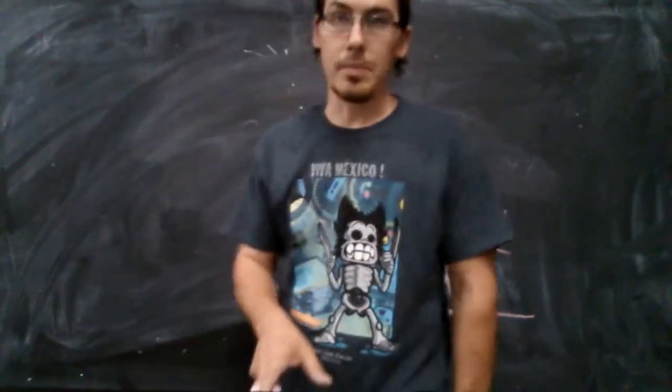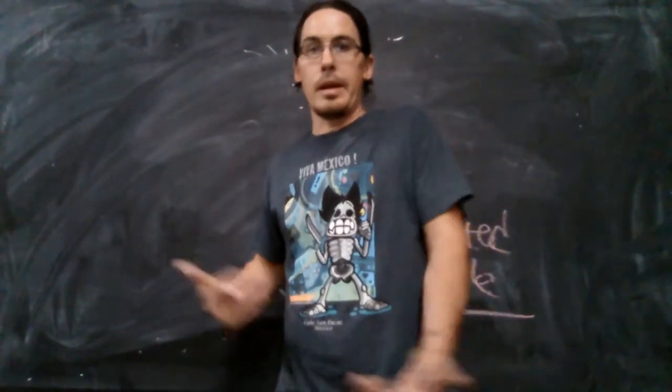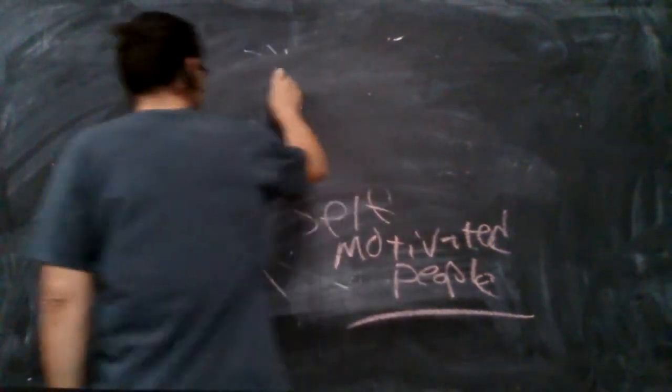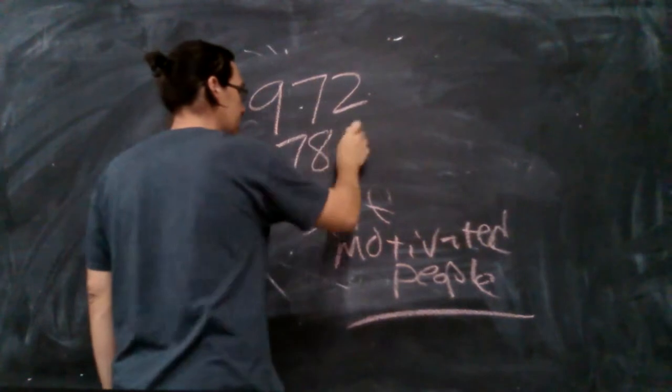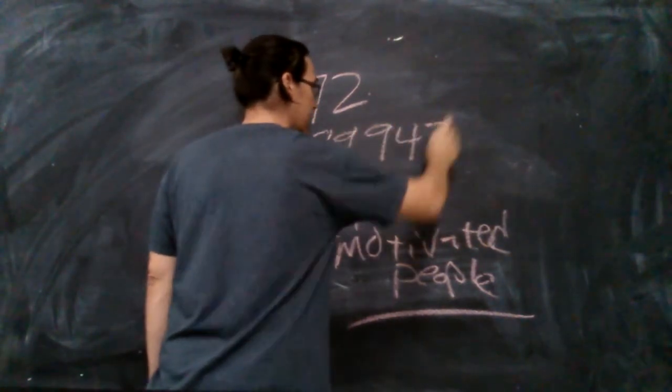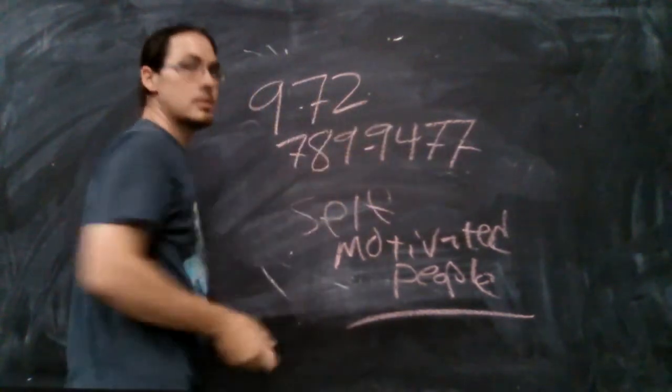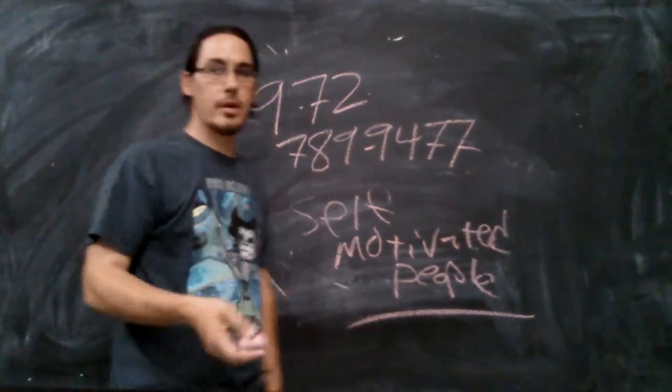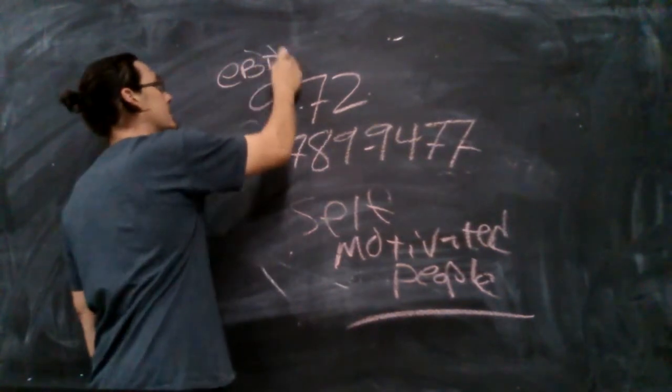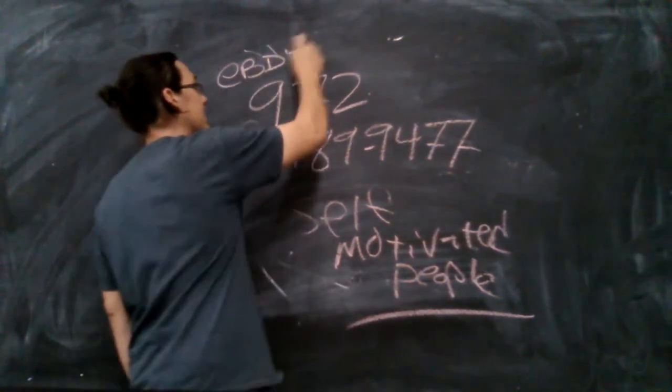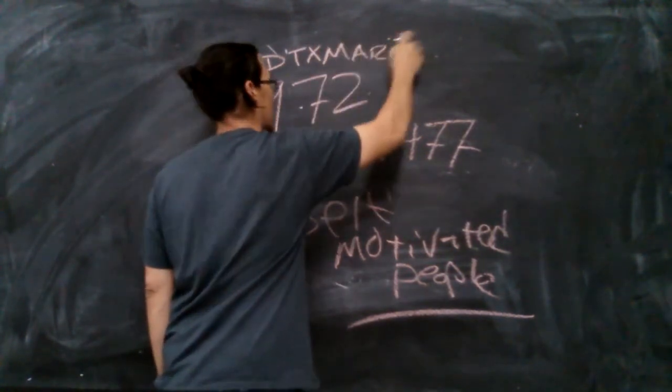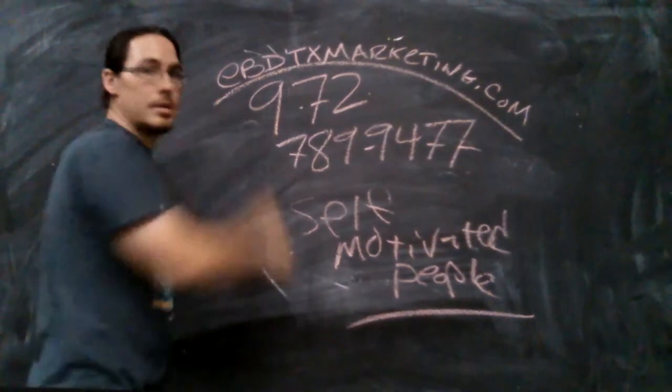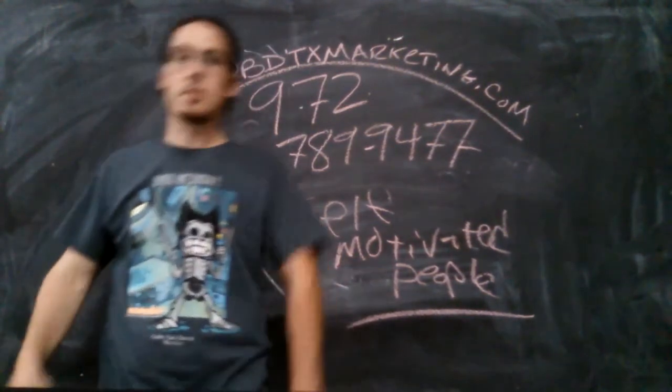I know this video is getting a little long and I didn't want it to be this long, but this is just, I just want you to know like who we are and what we're doing and how this whole operation works and just what this business is all about. So the number to call is 972-789-9477. 972-789-9477. And once again, if you need to do some further research is E-B-D, everybody decorates T-X marketing, the whole word. E-B-D-T-X marketing.com. And you can look us up some more. You can check us all out, whatever. But realistically, if this is what you're looking for, this is what you're looking for.